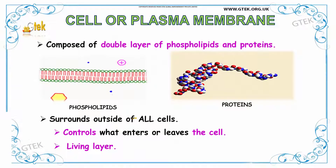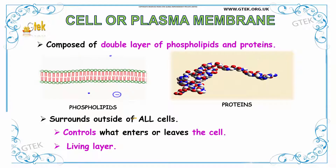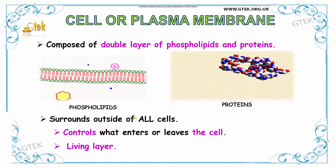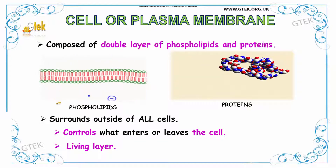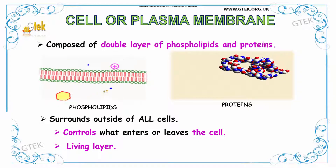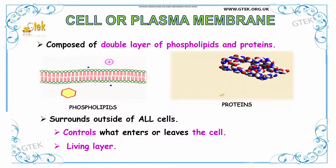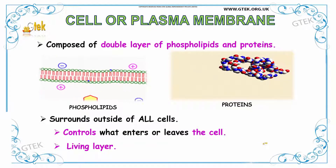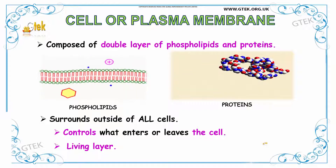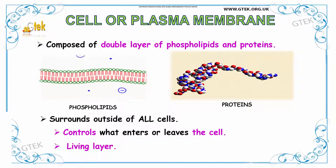Now let us see about the cell or plasma membrane. The cell or plasma membrane is composed of a double layer of phospholipids and proteins. It surrounds the outside of all cells, controls what enters or leaves the cell, and is the living layer.